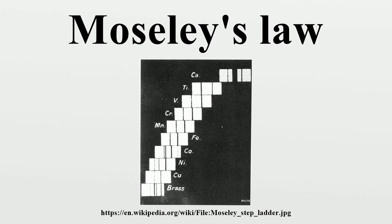As regards Moseley's L-alpha transitions, the modern view associates electron shells with principal quantum numbers n, with each shell containing 2n² electrons, giving the n=1 shell two electrons and the n=2 shell eight electrons. The empirical value of 7.4 for Moseley's screening constant is thus associated with n=2 to n=3 transitions, then called L-alpha transitions, occurring from the M to L shells in Bohr's later notation. This value of 7.4 is now known to represent an electron screening effect for a fraction of the total of ten electrons contained in the n=1 and n=2 shells.